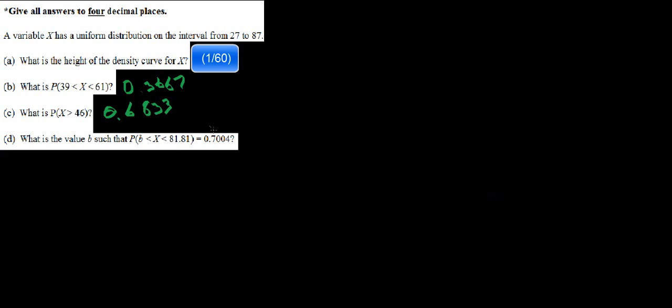The next question is, what is the value B such that the probability of getting B less than X and less than 81.81 equals something? Well, when we're normally finding the probability of something occurring within a range, we usually do the first value subtract the beginning one to get some sort of range.